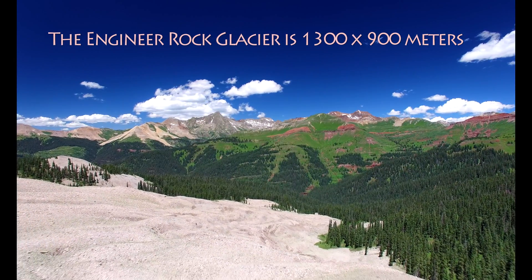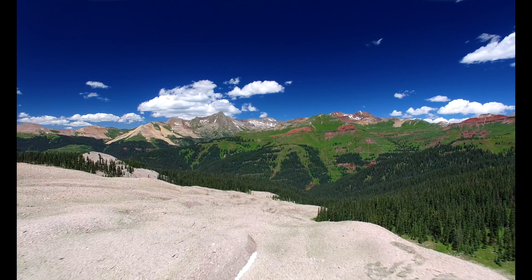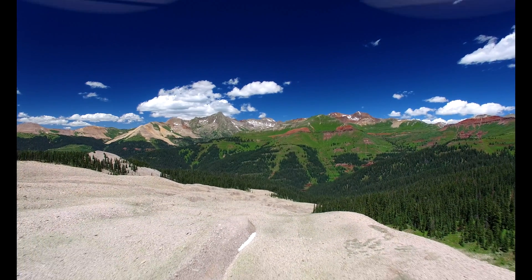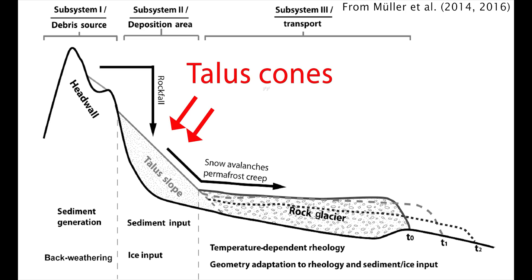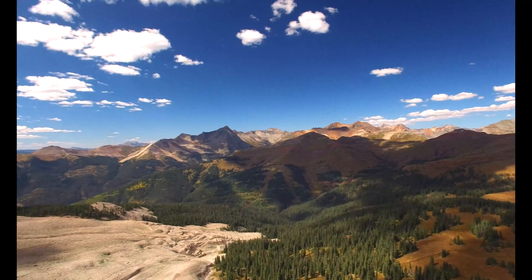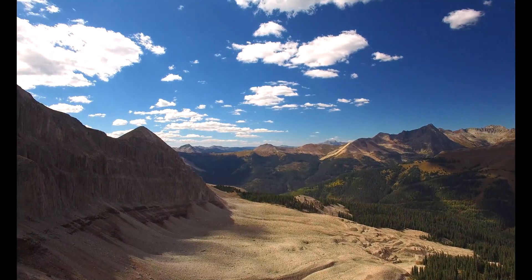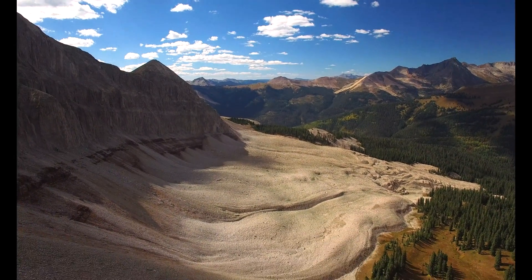Rock glaciers are made up of layers of rock fragments that lie on top of mixtures of snow, ice, and rock. The north side of Engineer Mountain is very steep — snow and scree fall down the cliffs and accumulate in talus cones at the bottom. This debris flows down and away from the mountain, forming the glacier, although snow and ice at the surface melts away each summer.